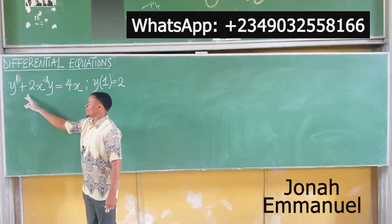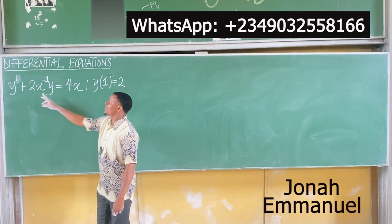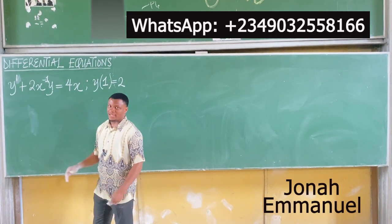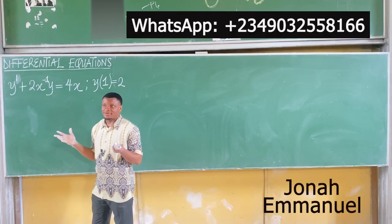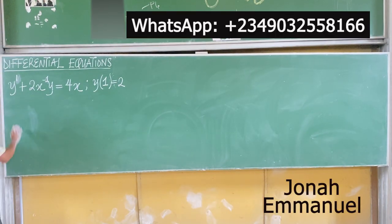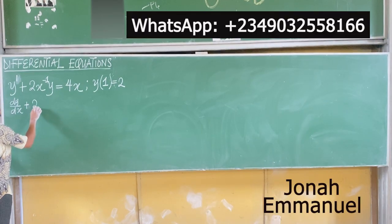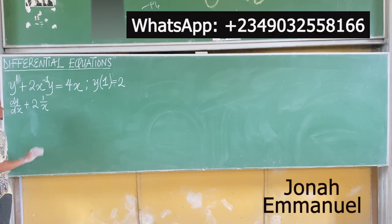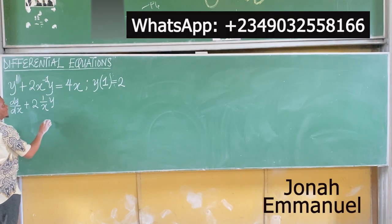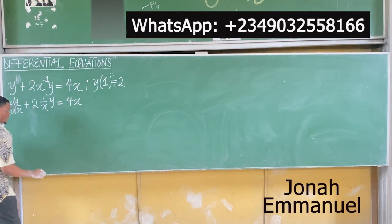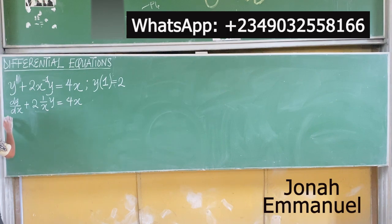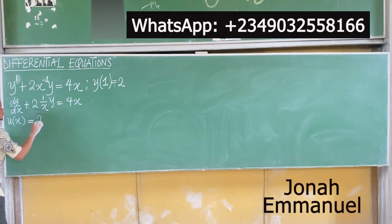The equation has the form y' + u(x)·y = v(x), so we use the integrating factor concept. We have dy/dx, so dy/dx plus — to make this easier — 2 times 1/x, same thing. Then y equals 4x. This gives us u(x), which is the coefficient attached to y: 2 times 1/x.